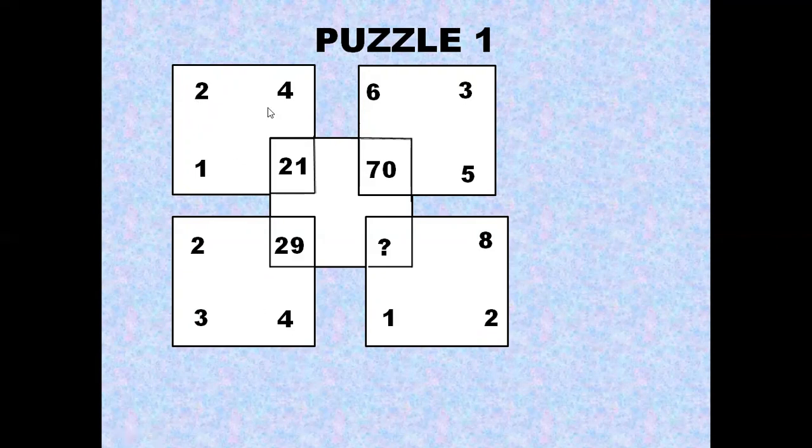So 4² + 2² + 1² is 16 + 4 + 1 = 21. Similarly, 2² + 3² + 4² is 4 + 9 + 16 = 29. 6² + 3² + 5² equals 70: 36 + 9 + 25 = 70.